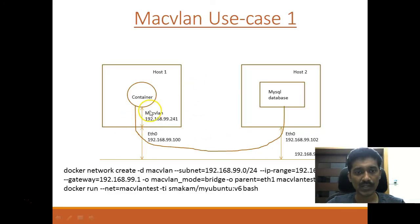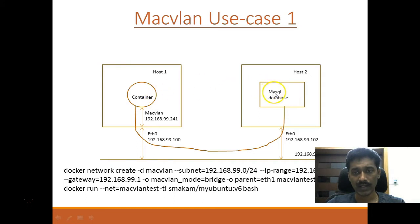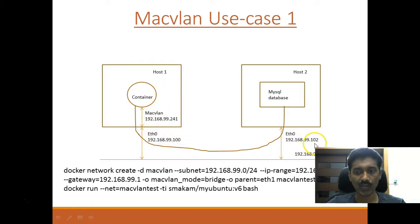This is my first use case. I have two hosts: on host one I am running a container, and on host two I have a MySQL database. I want to illustrate a legacy application that this container is going to connect to — MySQL is just the example here. The underlying network has host one in one subnet and host two in the 192.168.1.x network. We will create the container in that subnet and connect it to the MySQL database, which is running directly on the underlay IP.